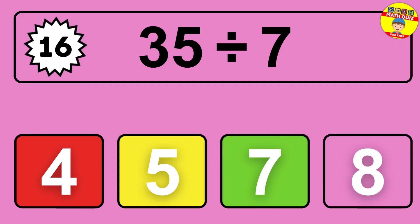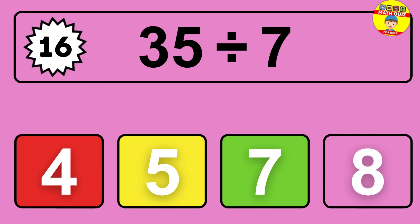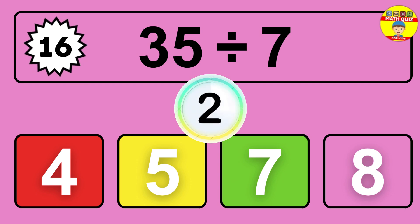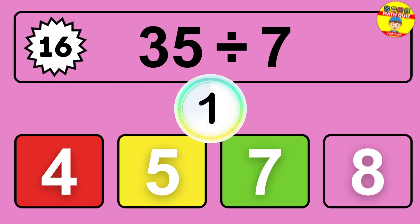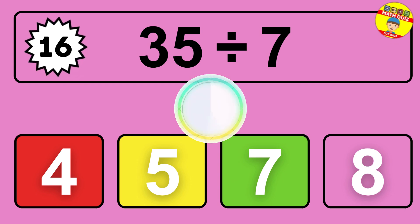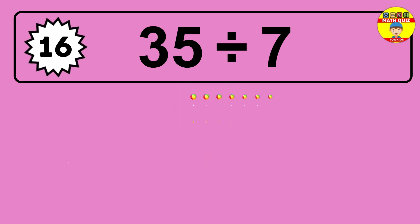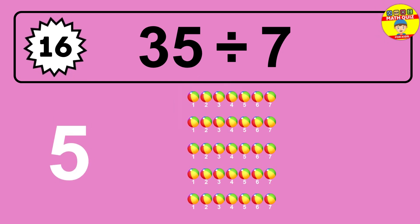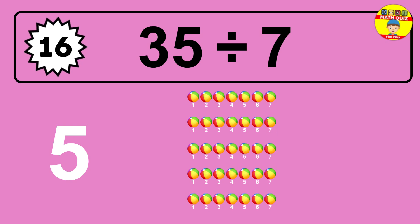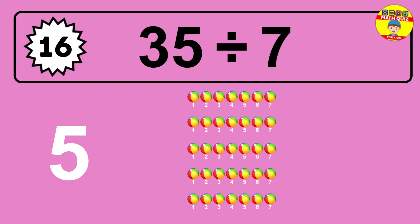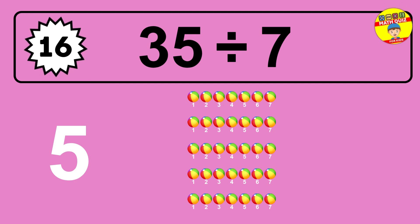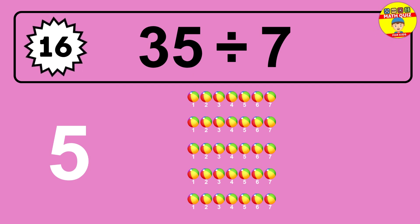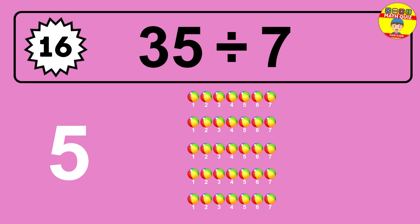35 divided by 7 is time to think. Let's go to the solution. Divide the number 35 by 7. Each group contains 7 units, so dividing 35 by 7 results in 5 equal groups. Thus the result is 35 divided by 7 equals 5.